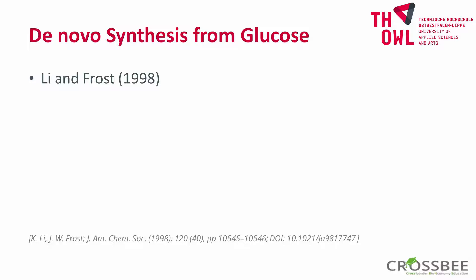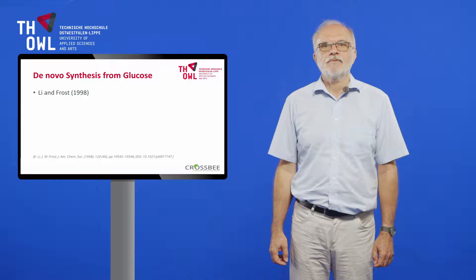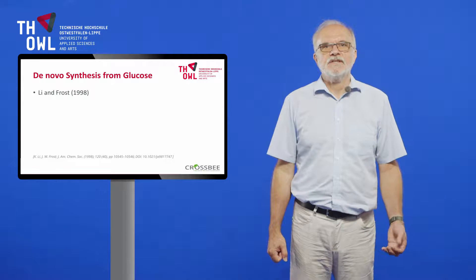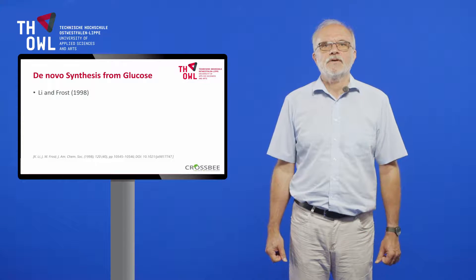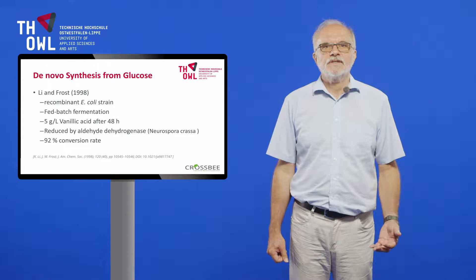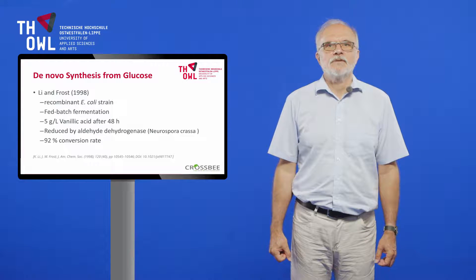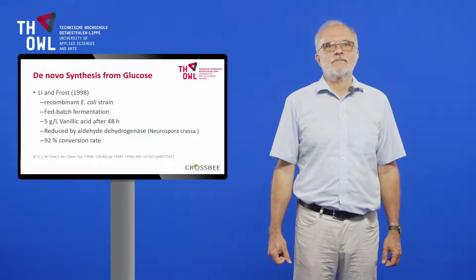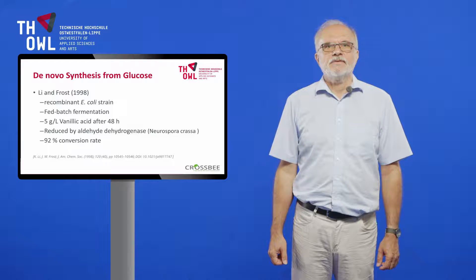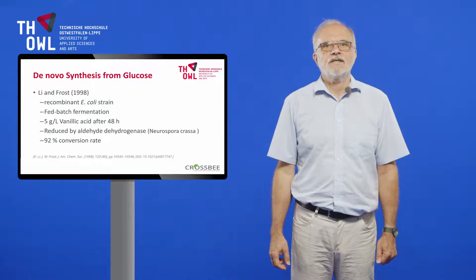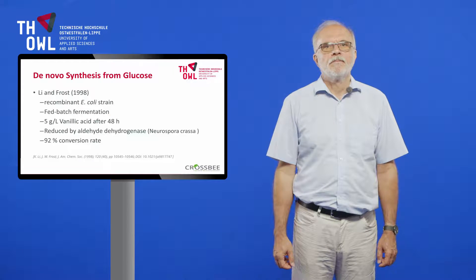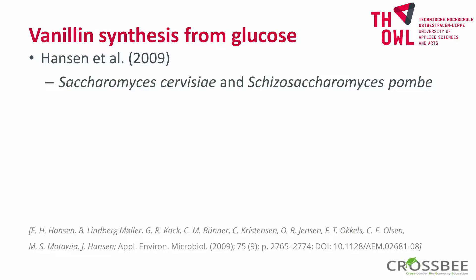Let's start with the de novo synthesis from glucose. Already in 1998, Lee and Frost from Michigan State University described a two-step process for the production of vanillin. They used a recombinant E. coli strain and obtained, in a fed-batch fermentation, 5 grams per liter of vanillic acid after 48 hours. Vanillic acid was then reduced by an aryl aldehyde dehydrogenase isolated from Neurospora crassa with a 92% conversion rate within 7 hours to vanillin. They received a patent for this process in 2002. The authors themselves realized that this process was not sufficient for commercial production and that further optimization — especially the integration of an aryl aldehyde dehydrogenase into a microbial host — would be necessary, as this enzyme is NADPH dependent.